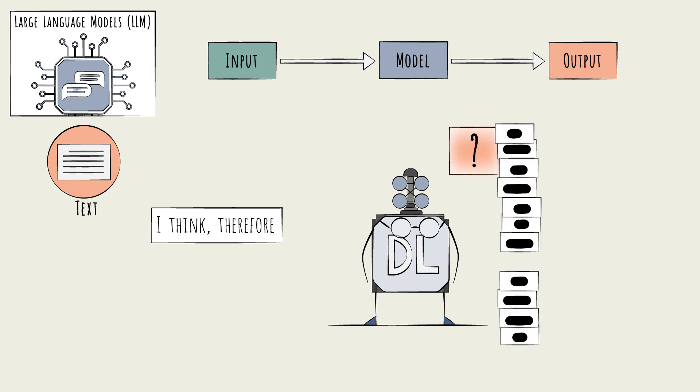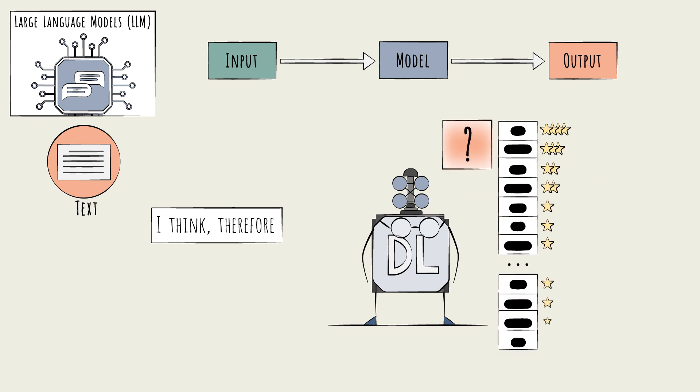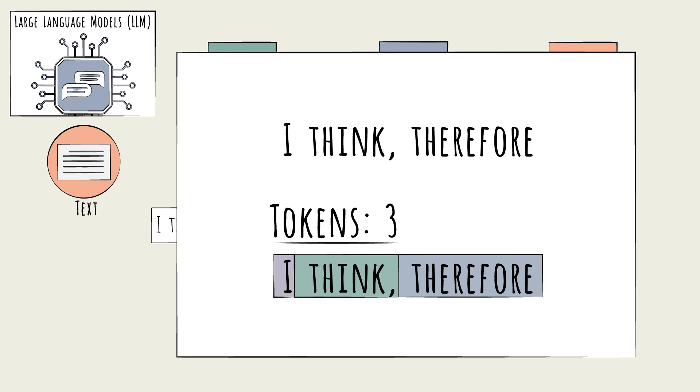To do this, the model needs a way to score all possible words, and then pick from the top few. This requires the network to have thousands of output neurons, one for each of the most common words in the language. A vocabulary of 40 or 50,000 words might be reflected here. In practice, models don't necessarily select one word at a time, but one fragment at a time. That fragment is called a token and can vary from a single punctuation mark to part of a word to a whole word.